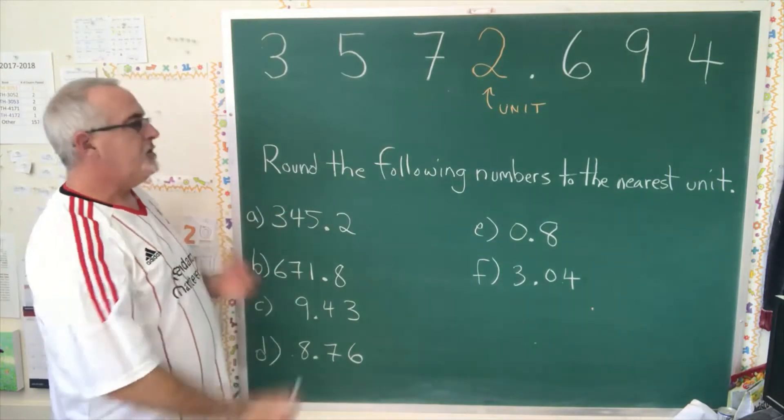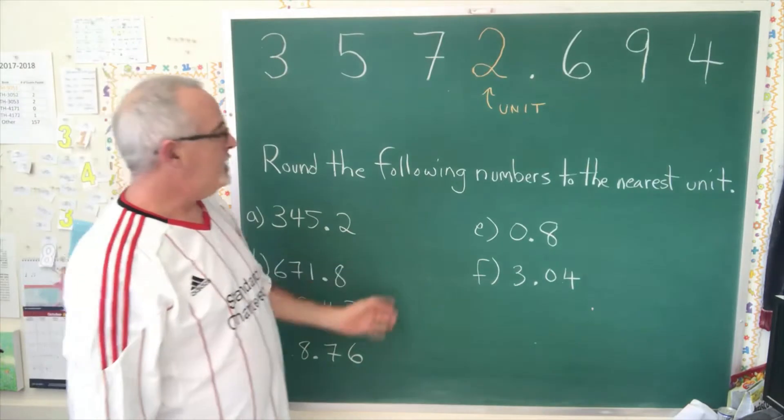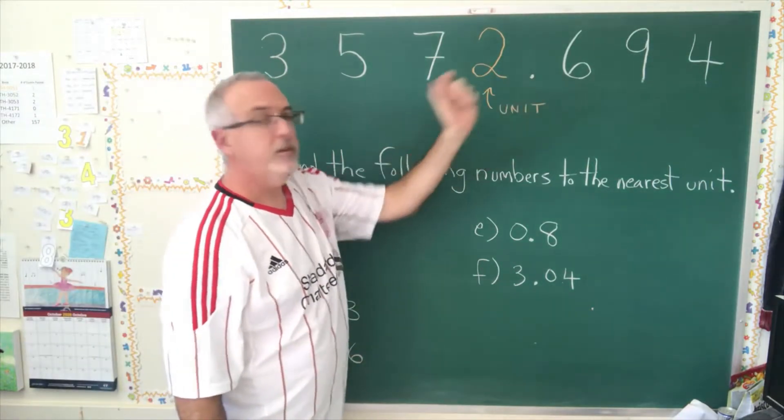So here we have six examples. Round the following numbers to the nearest unit. We are rounding each of these numbers to the nearest position to the left of the decimal.